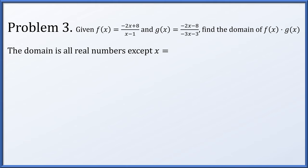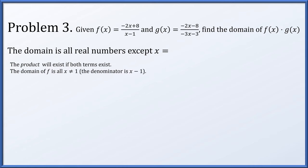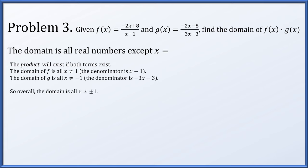Problem three: given f of x equals negative 2x plus 8 over x minus 1, and g of x equals negative 2x minus 8 over negative 3x minus 3, we need to find the domain of the product f of x times g of x. The product of two numbers exists provided both numbers exist. So f exists for all x other than 1, and g exists for all x other than negative 1. Overall, x can be any number except plus or minus 1. For x equals plus 1, f of x will not exist, and for x equals minus 1, g of x will not exist.